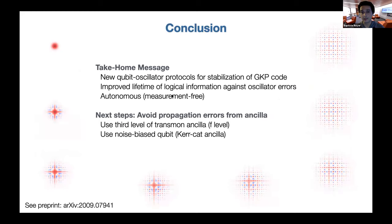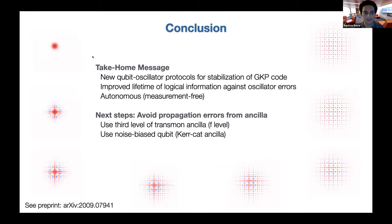To conclude, we have developed new protocols to stabilize the GKP code that directly take into account the finite-energy nature of the code, enabling large improvements in lifetime against oscillator errors. The protocol is autonomous — no measurement is needed at any time, only qubit reset. The pictures on the side show one trajectory over four steps of the protocol, with the GKP grid slowly appearing in the Wigner function.